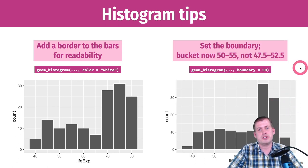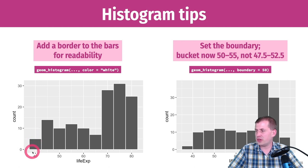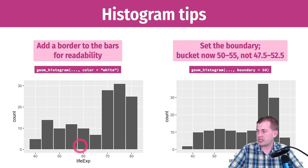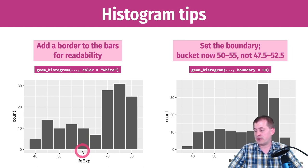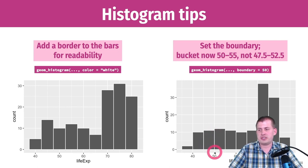You can also specify a boundary to force one bar to start at a specific value, and all other bars will align from there. By default, R places the center of round numbers in those bins — so with a bin width of 5, a bar might span 57.5 to 62.5 rather than 60 to 65, which is harder to interpret. Setting boundary equals 50 forces one bar to start at 50.